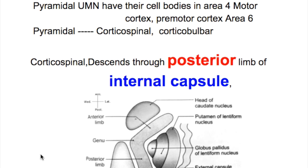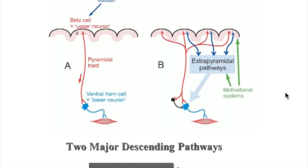In this video we'll discuss the upper motor neuron: their origin, their pathway, and their abnormalities. There are two types of motor neurons: the pyramidal and extrapyramidal.